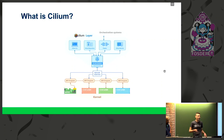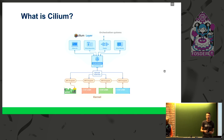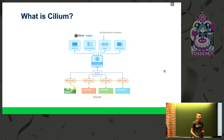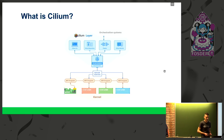Cilium consists of several components. The main one is the agent which runs on every node in the Kubernetes cluster, and it takes care of generating the BPF programs and loading them into the kernel. There are also several other components to interact with Cilium, like the CLI, plugins to different container runtimes, and the policy repository.